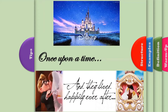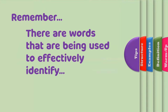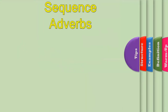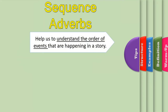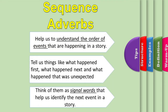These are clues to begin and end the story. But remember, there are words used to effectively identify the sequence of events, the order of a story, and to organize procedures, directions, and instructions. This is through the use of sequence adverbs. We use adverbs of sequence, or sequence words, to help us identify the order of events happening in a story. They tell us what happened first, what happened next, and what happened that was unexpected. Think of them as signal words that help us identify the next event in a story. Without these words, the flow of a story can really be confusing.